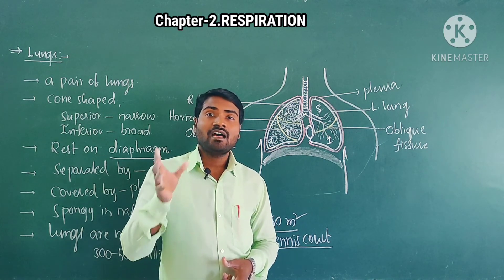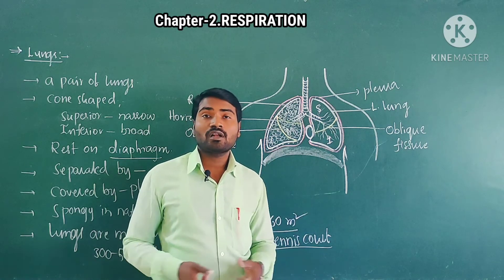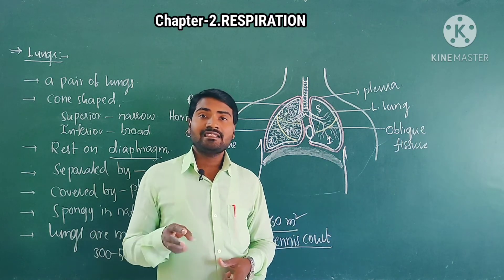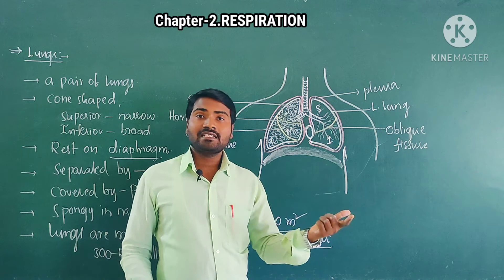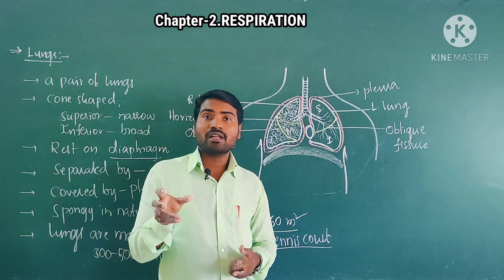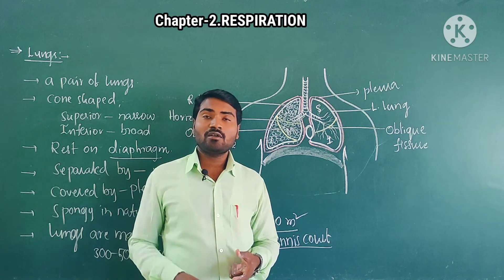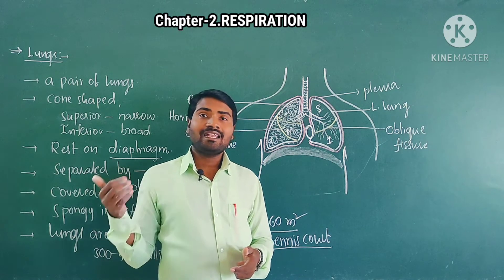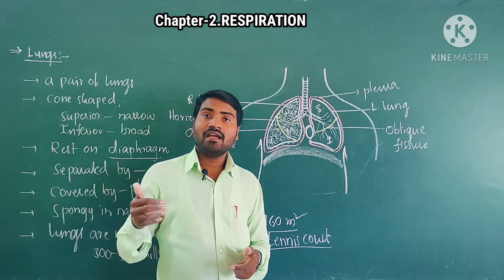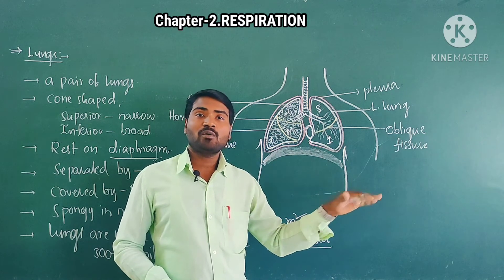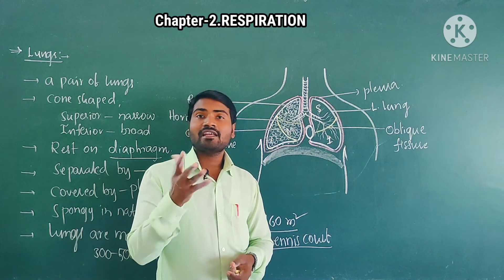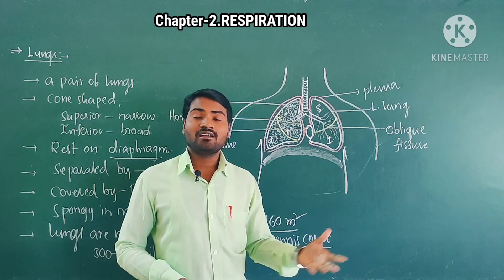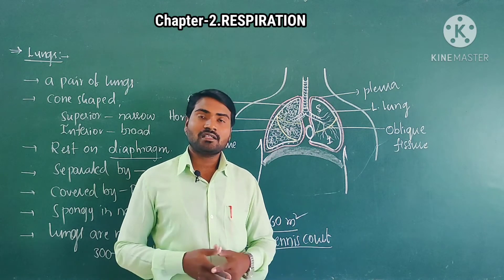Now let's differentiate between the right lung and left lung. Right lung is slightly larger in size; left lung is smaller in size. Right lung is divided into 3 lobes — superior lobe, middle lobe, inferior lobe — whereas left lung is divided into 2 lobes — superior lobe and inferior lobe. Right lung is divided by oblique fissure and horizontal fissure, whereas left lung is divided by only oblique fissure. Right lung does not give space for the heart, but left lung provides space for the heart.